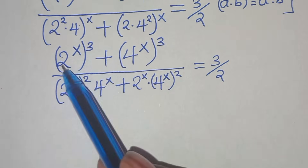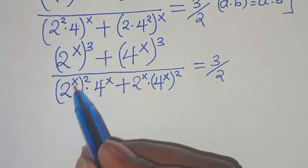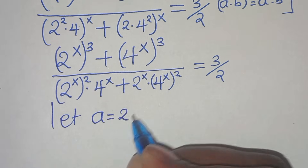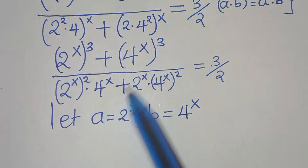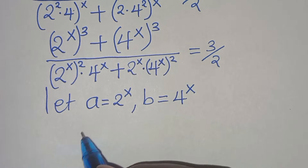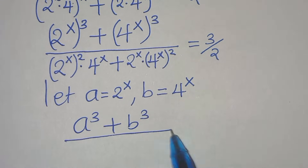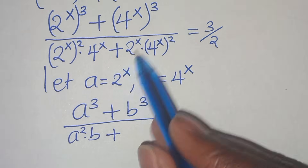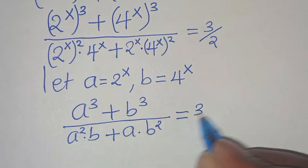Now, since 2 to the power of x and 4 to the power of x appear throughout, we let a equal 2 to the power of x, and b equal 4 to the power of x. Expressing the equation in terms of a and b: in the numerator we have a cubed plus b cubed, divided by a squared times b plus a times b squared, equals 3 over 2.